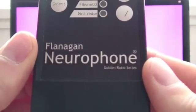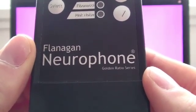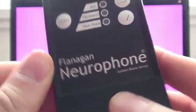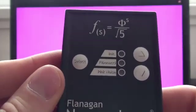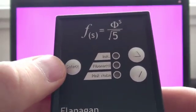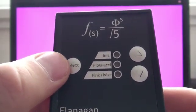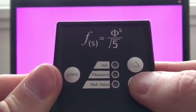Starting with the first one which is the older version. It's called the Flanagan Neurophone GRS, standing for Golden Ratio Series. As you see it's a pretty small handy device. On the front you would only find three buttons. On the left side it's power on/off and select, and on the right side it's simply volume up and down.